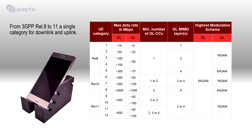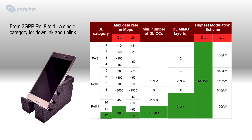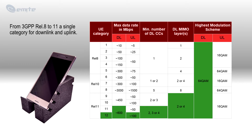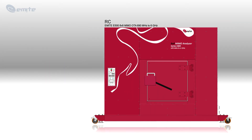Different pre-3GPP UE categories specify the performance capabilities of a device in terms of maximum supported data rates, MIMO capabilities, and supported modulation schemes. With 3GPP Release 11, four new categories were approved. In this video, we will test a UE category 12, which can achieve a maximum data rate of 600 Mbps by using 4 component carriers, 64 QAM modulation scheme, and a MIMO 2x2 architecture.